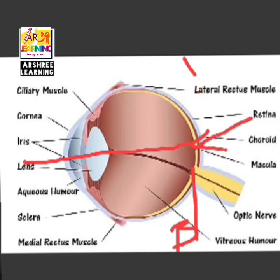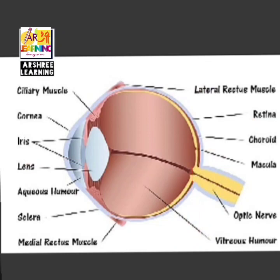These are the main parts of the eye whose functioning we have described according to the diagram.